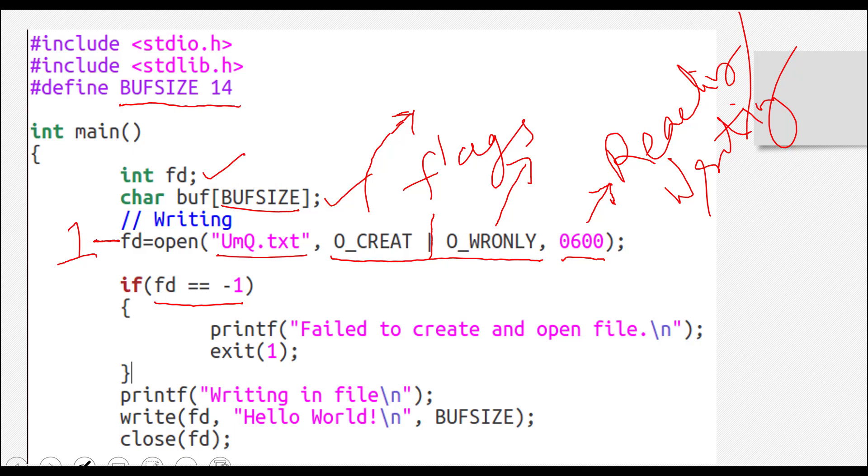And if it doesn't go here, then obviously we'll come to this line. Then there is step number two. What is step number two? We have to write in that file. We just read the system call for write. We just read the prototype. The first parameter was FD which is passed here. The second parameter was some string which has to be written in the file.